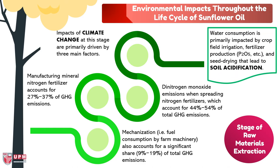The second environmental impact is soil acidification. Water consumption is primarily impacted by crop field irrigation, fertilizer production such as P2O5, and seed drying, which lead to soil acidification.